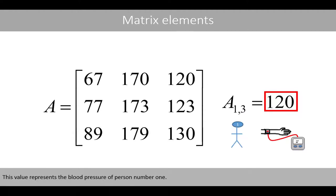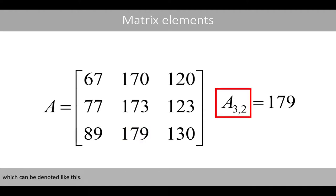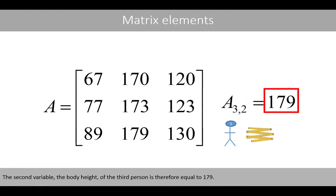This value represents the blood pressure of person number one. Let's take another example. This element is located on the third row in the second column, which can be denoted accordingly. The second variable, the body height, of the third person is therefore equal to 179.